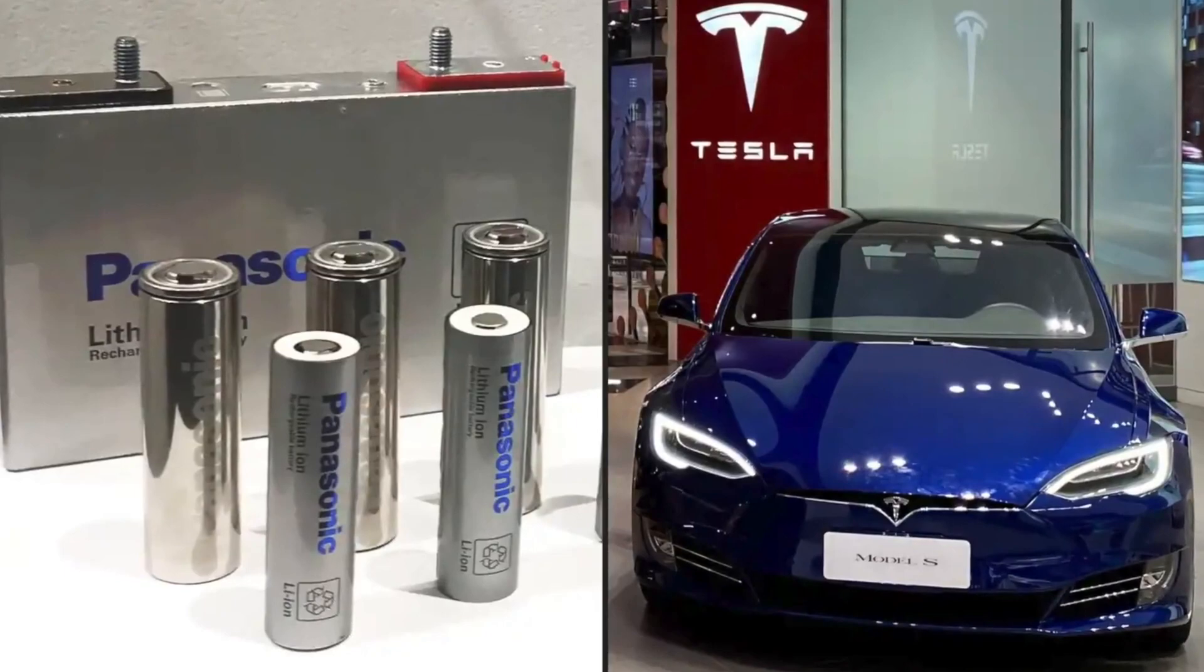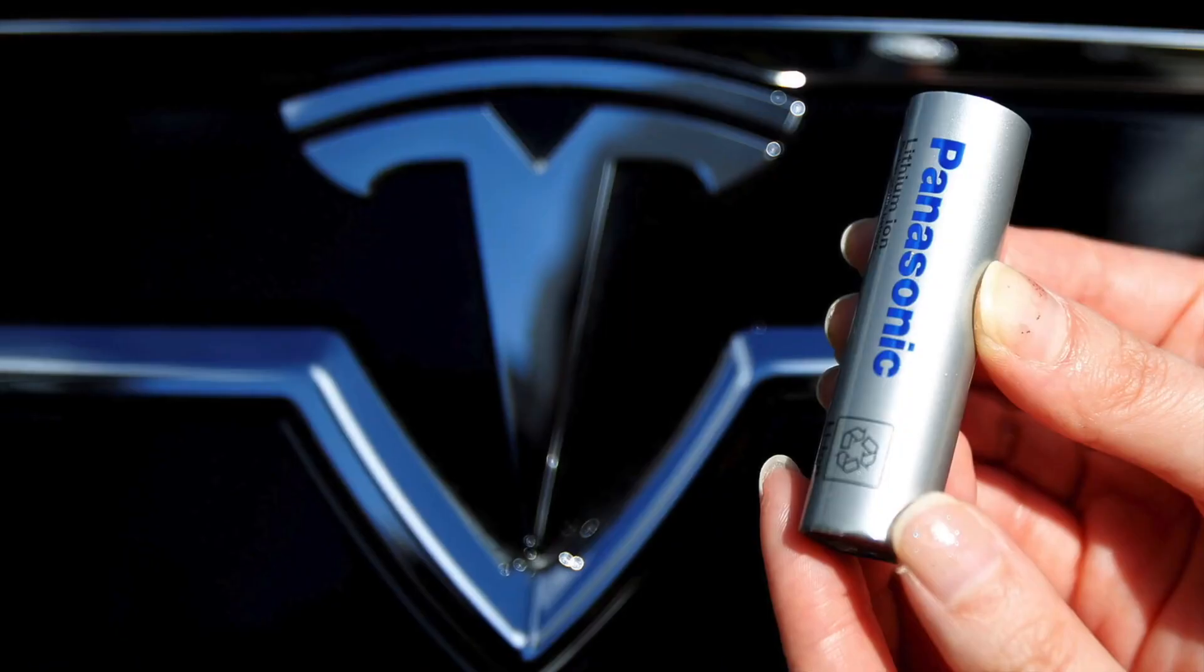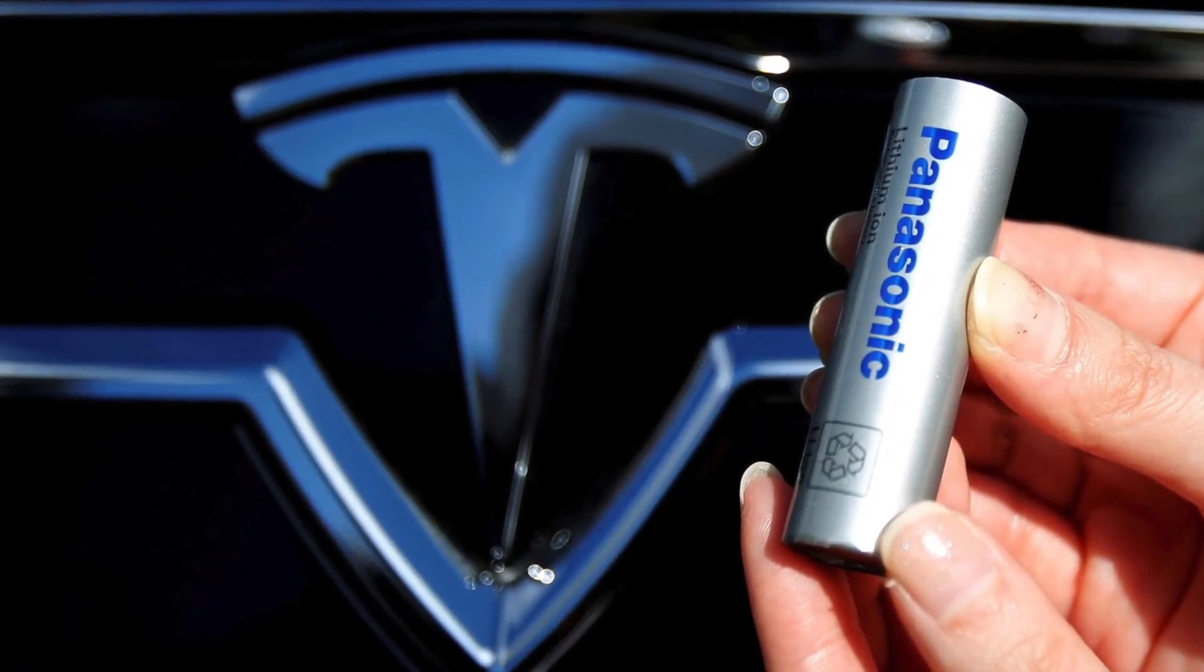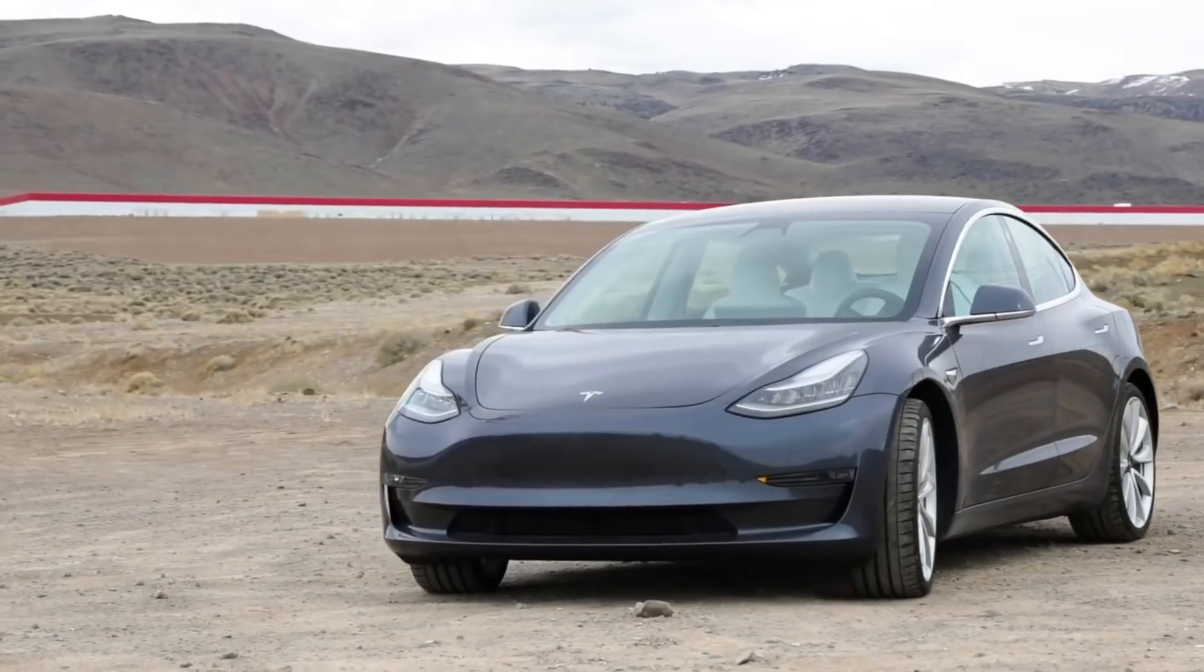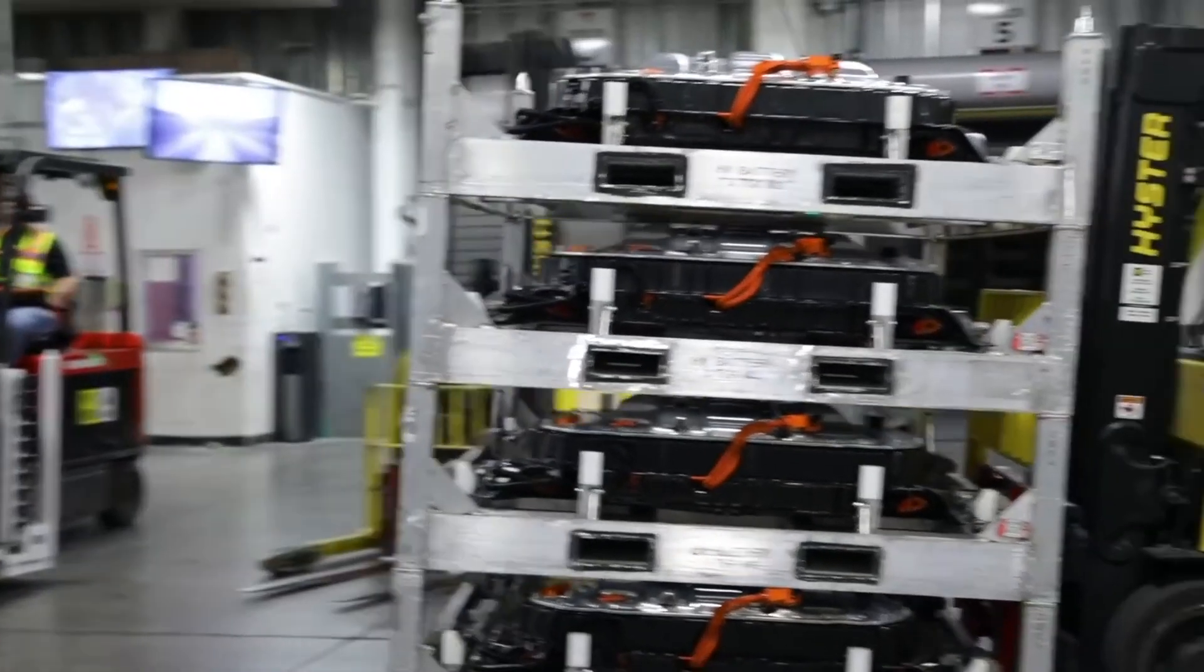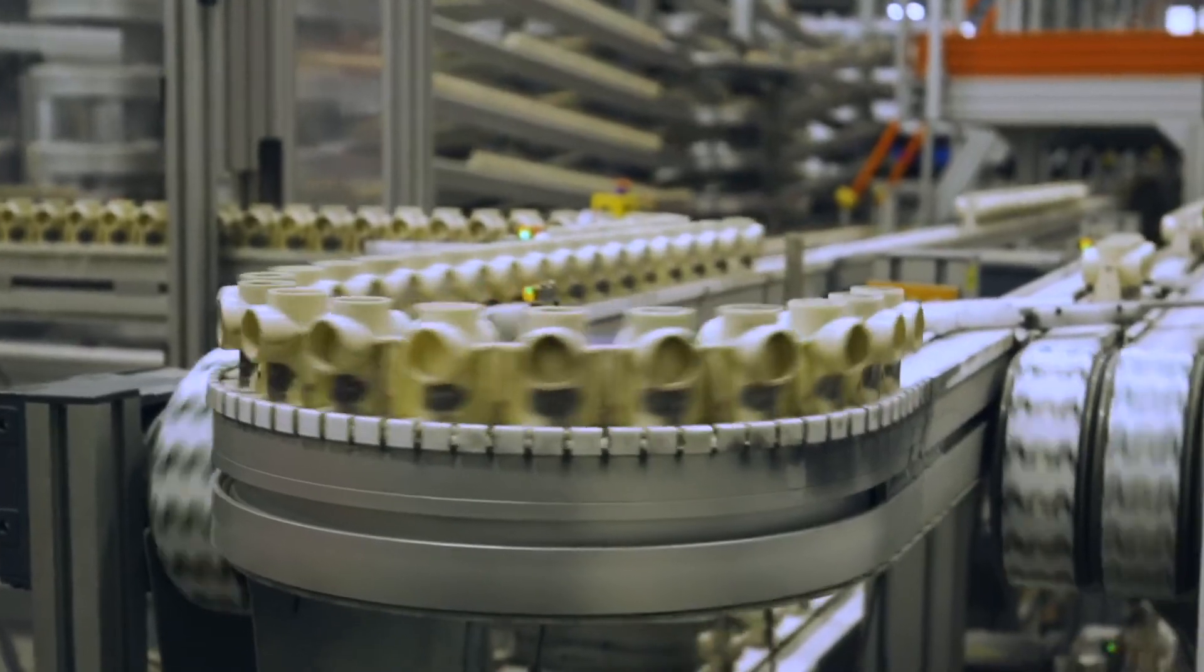Andrew Bellino, Tesla's vice president of powertrain and energy engineering, added that the company would install equipment capable of producing 100 gigawatt-hours worth of cells. He estimated that Tesla could achieve its 100 gigawatt-hours goal by the end of 2022.